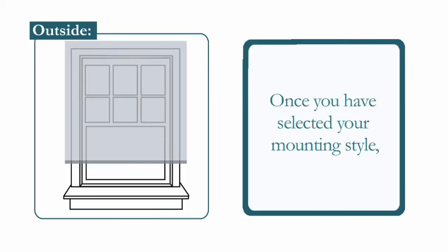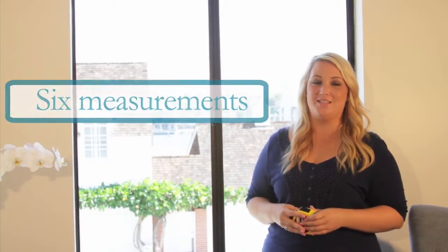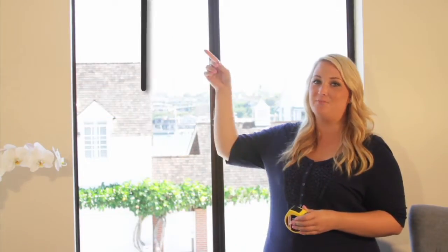Once you've selected your mounting style, grab a steel measuring tape so we can begin. If you've chosen an inside mount, you'll take six measurements: three across and three from top to bottom.